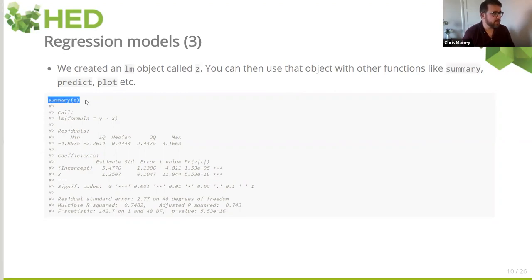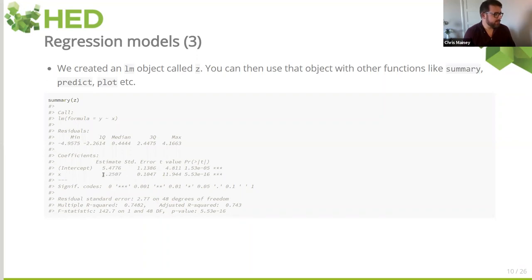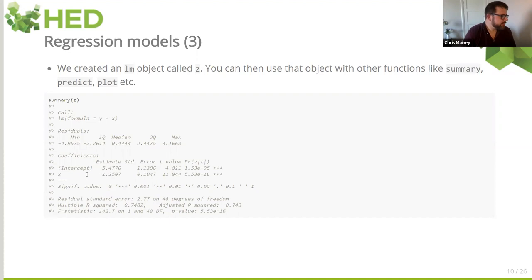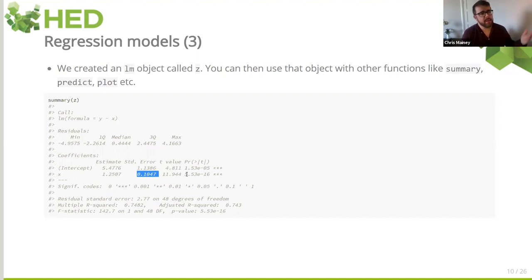Having created a model, I've used the summary function — summary(z). We have our call, which tells you the model you created. The regression coefficients: we're saying the estimated starting value, our intercept, is 5.477, and then for each x we multiply it by 1.25, which will then predict our y with a measure of error. We also have the standard errors for each of those estimates. There is then a probability test — a t-test — performed on them, so we have t-values and p-values. If we're retaining the 95% threshold, and this p-value is less than 0.05, we have a significant coefficient. R has a handy significance code — the number of asterisks tells you how significant it is. Three asterisks means it's a highly significant one.